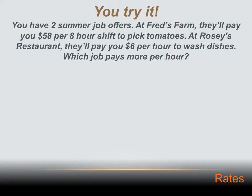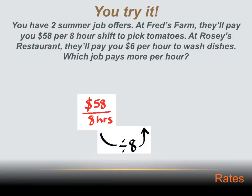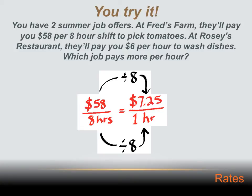You've got two summer job offers. At Fred's Farm they'll pay you $58 per 8-hour shift to pick tomatoes. At Rosie's Restaurant they'll pay you $6 per hour to wash dishes. Which pays more per hour? We already know Rosie's unit rate: $6 per one hour. For Fred's, divide $58 by 8 hours to get the unit rate. That gives $7.25 per hour — considerably more than Rosie's $6 per hour.